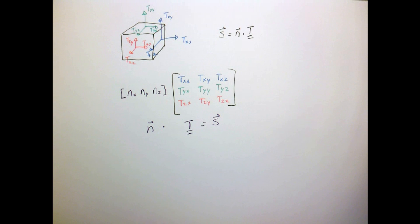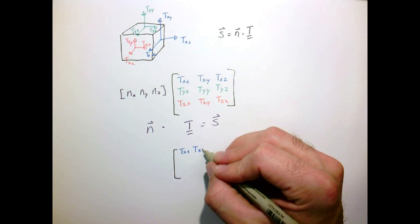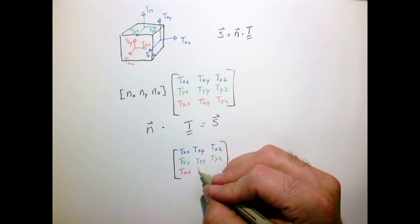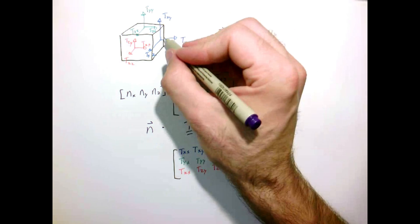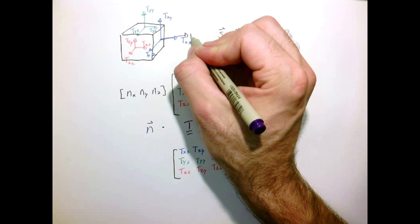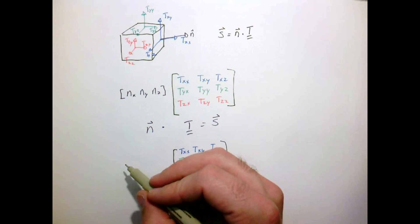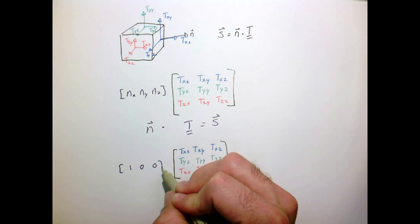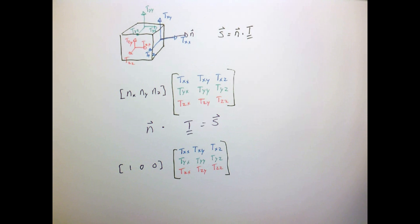So as an example of this, let's just consider a face where the normal vector points out here, just to make sure that this works. So our normal vector there is one, zero, zero.